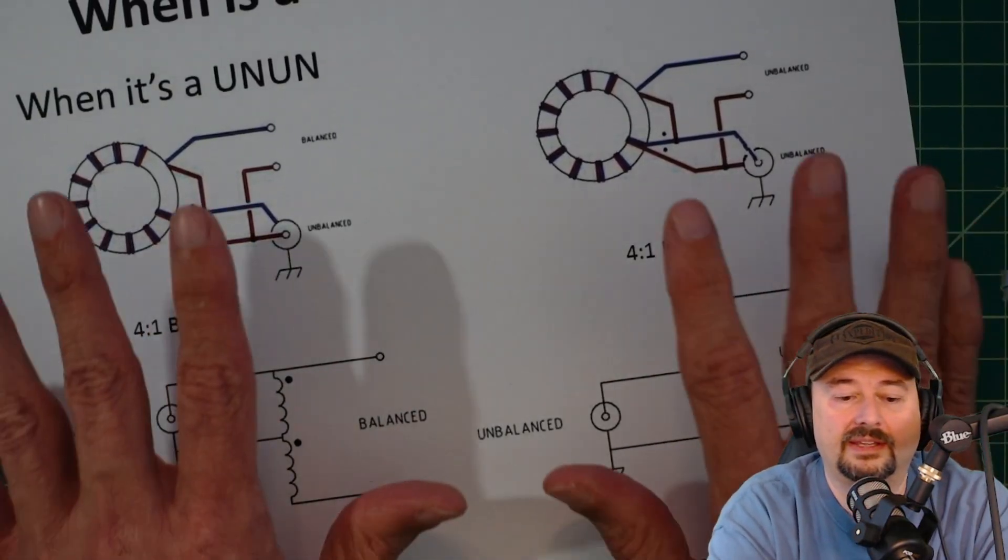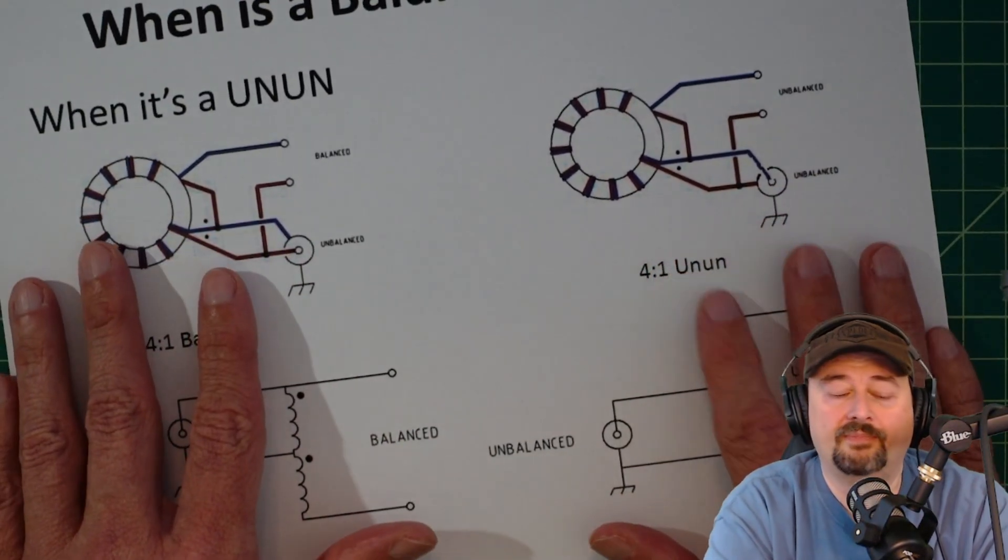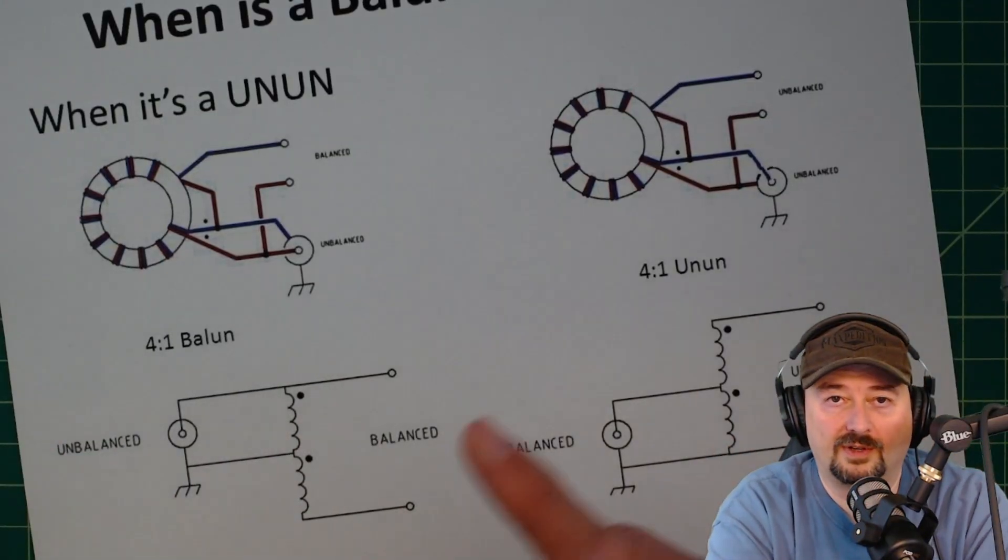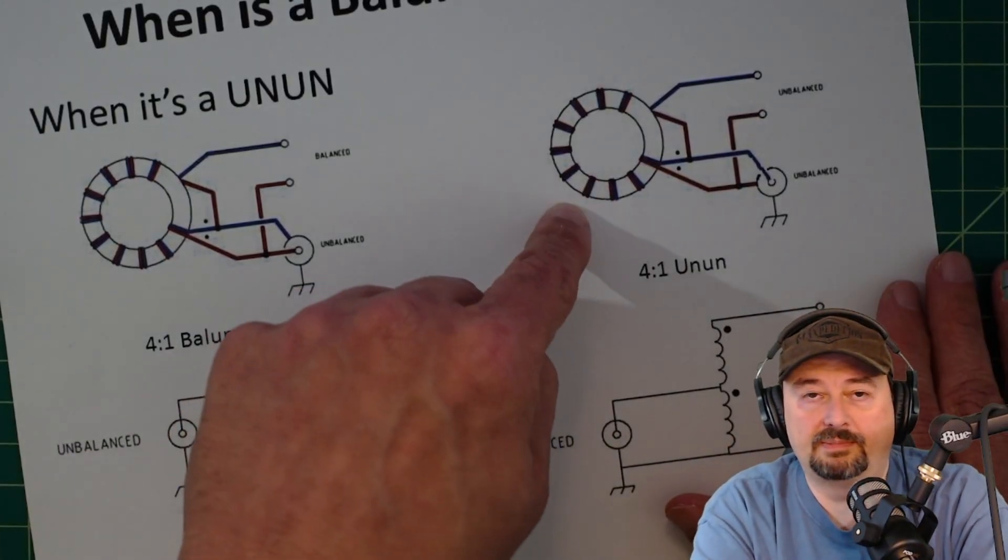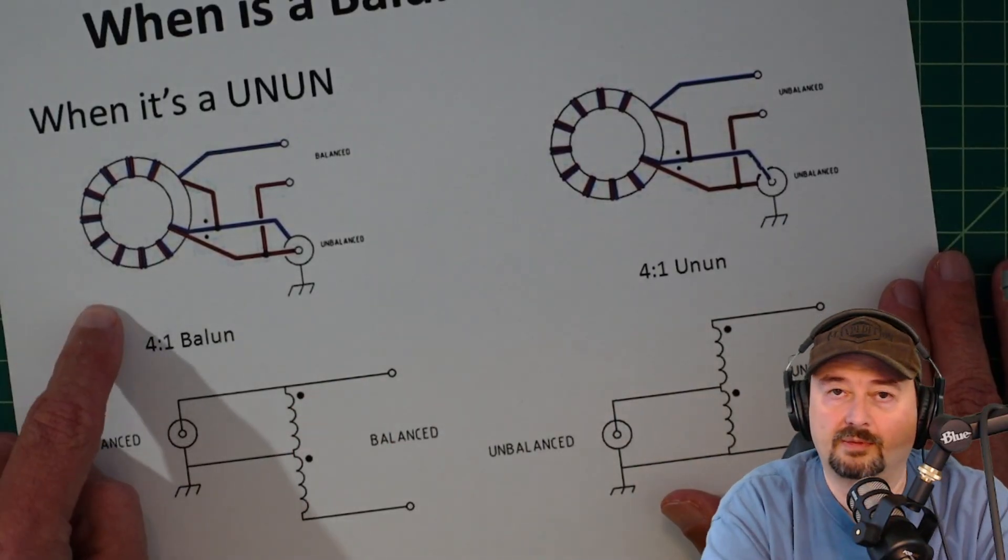That's the difference, that's all it is. The use case for these are different as we just explained. If you use them in the wrong way, if you hook your dipole up to an unun, it's not going to perform as well as if you hooked your dipole up to a balun.